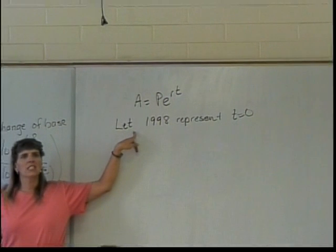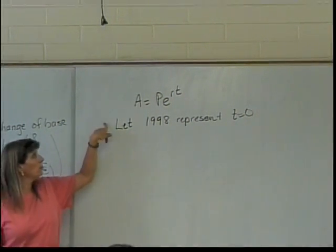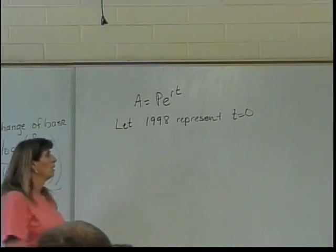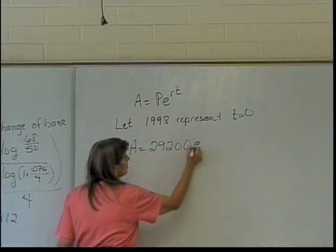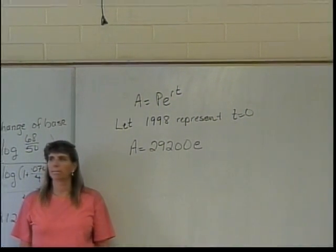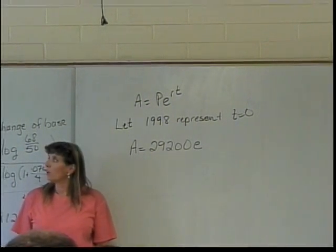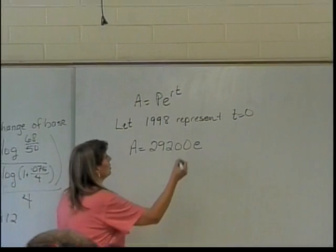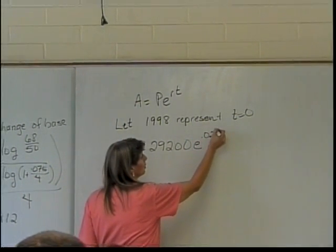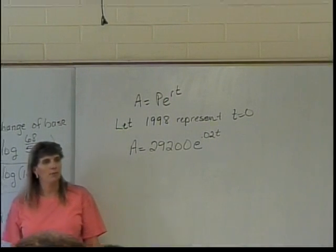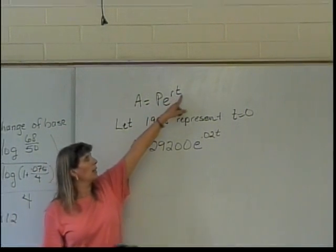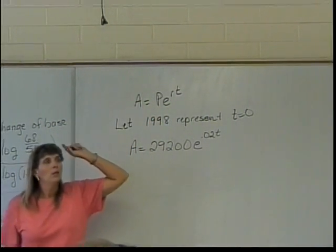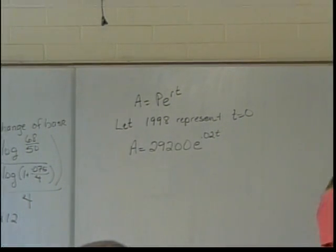Let 1998 represent T equals zero, and then we're going to count years since 1998. So once I put this in, then I can do what Chris wants to and put in my A equals 292,000 times e. What's R in my problem? 0.02, because the relative growth rate is R and I change it to a decimal, so 2% becomes 0.02. And then in my model, I'm going to still have time. So I will need, when I actually write a model, I fill in for P, I fill in for R, but I leave T and A open so that I can plug in things for time and get out populations.